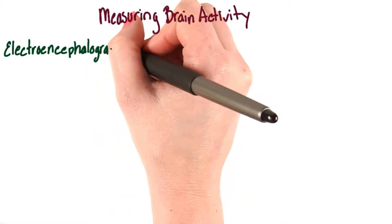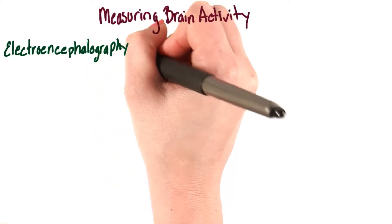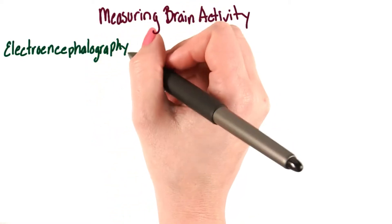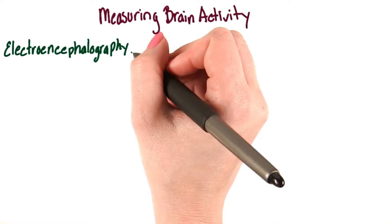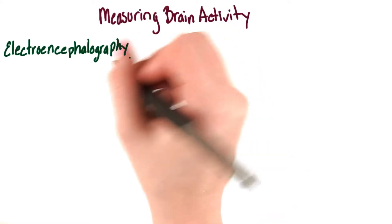Let's talk about three of the best ways to measure brain activity, starting with electroencephalography, commonly called an EEG.